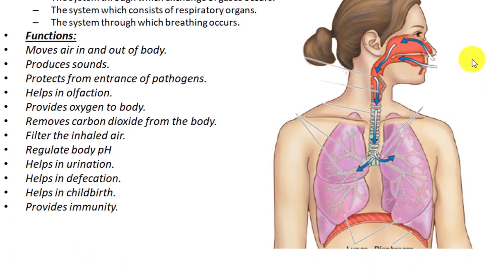Another function is that the respiratory system filters the inhaled air. When we inhale, the air may contain dust particles, pathogens, and smoke particles. Our respiratory system has important protective measures: nasal hairs in the vestibule of the nose, mucus membranes in the larynx and trachea, and inside the alveoli we have macrophages. All of these help in the filtration of air.